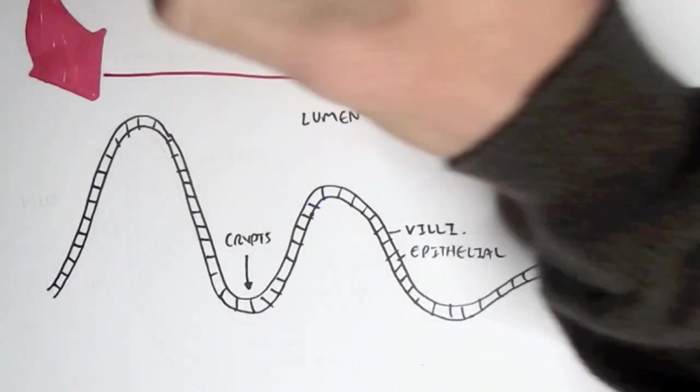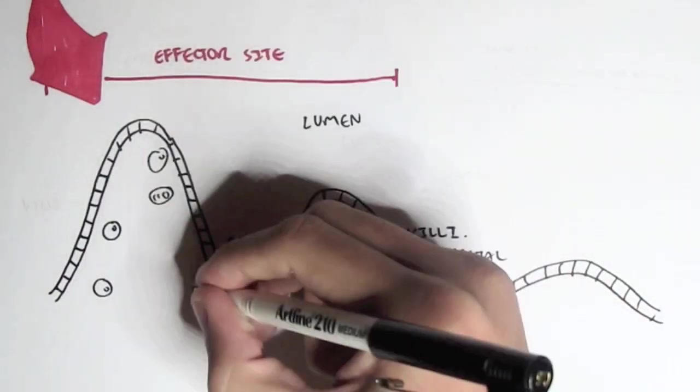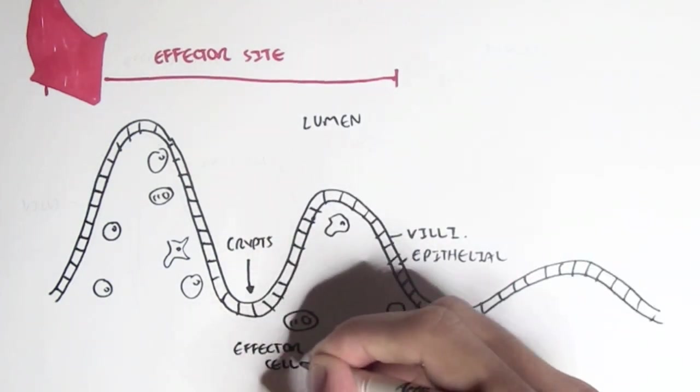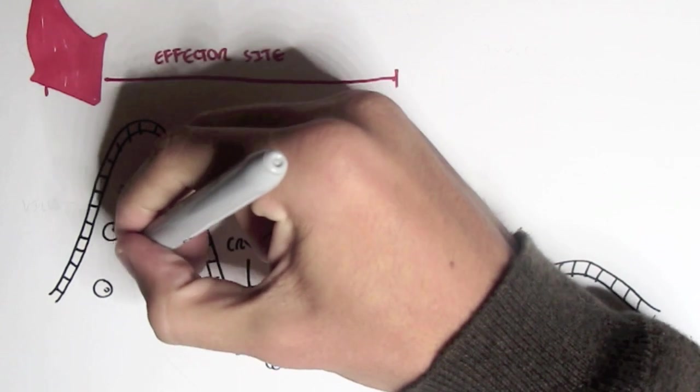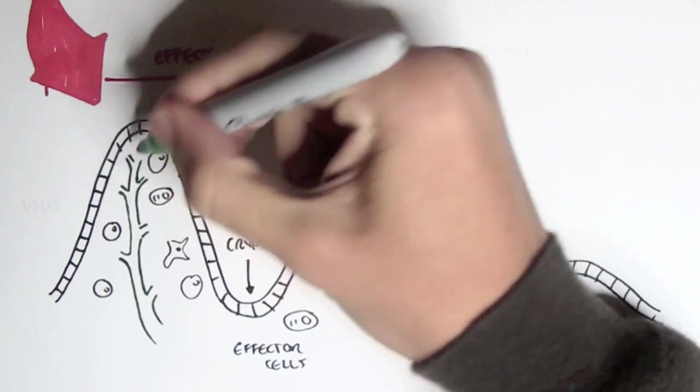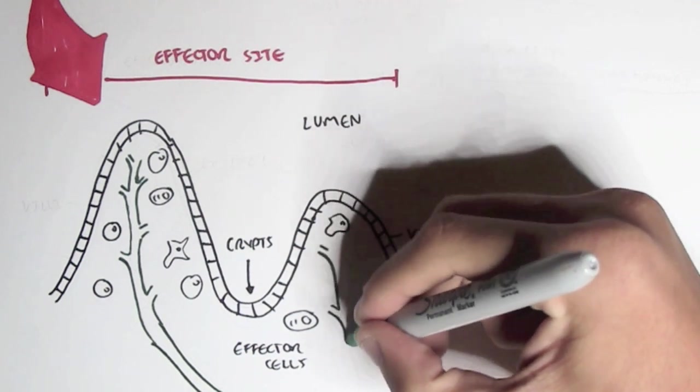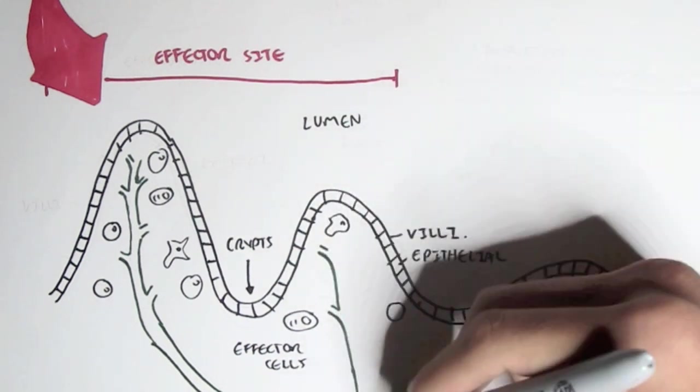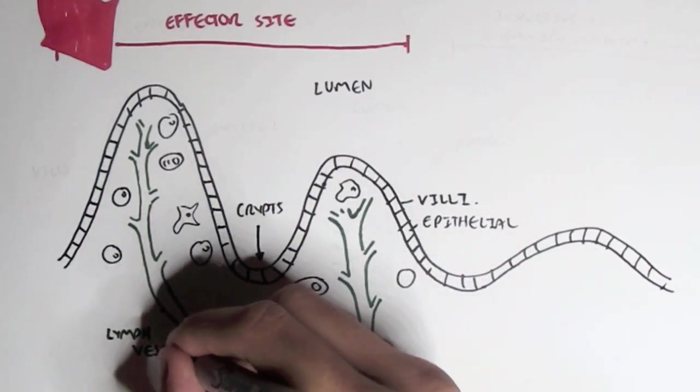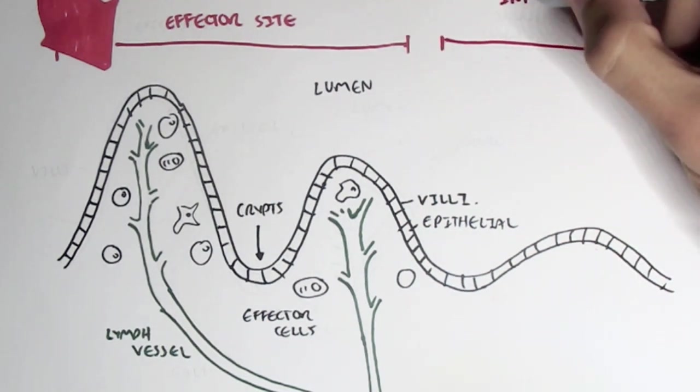Now we have two important sites within the mucosal system. We have what's called the effector site. The effector sites are where effector cells reside in. Effector cells being activated CD8, activated CD4 as well as plasma cells. Because remember, plasma cells are already like the activated B cells. We also have lymph vessels all going around this area, because lymph vessels are also important in the fat absorption as well as bringing the immune cells in and out of these areas.